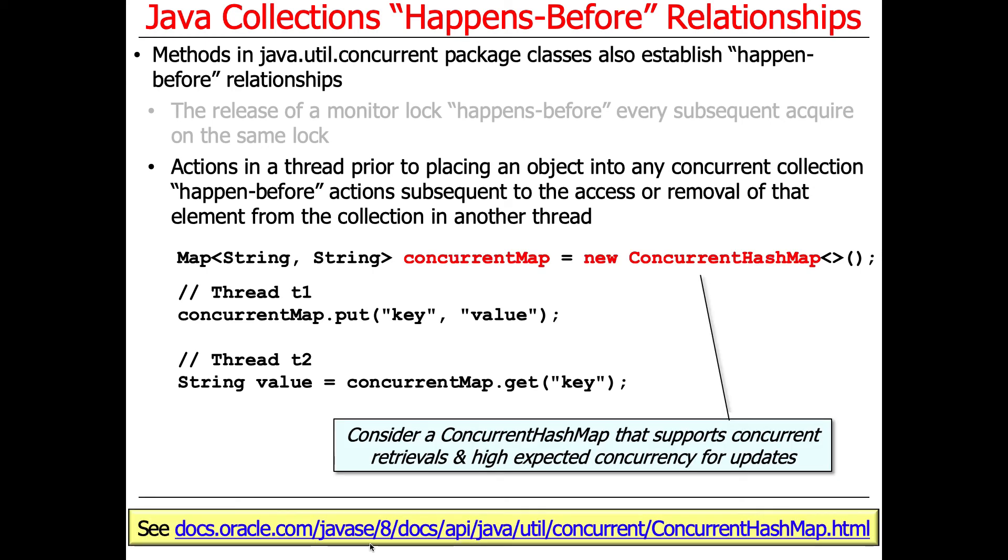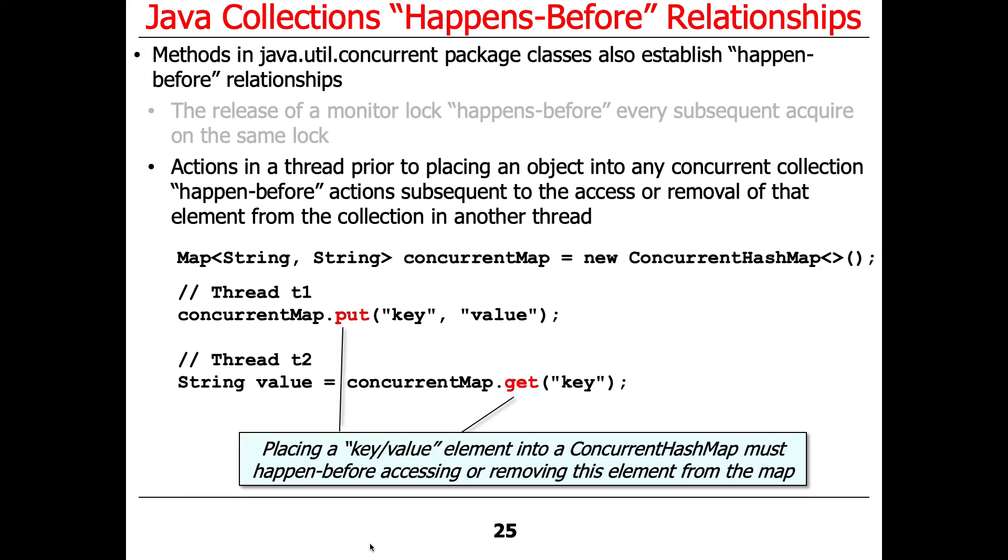Here's an example. We make ourselves a new ConcurrentHashMap. We come along in thread one, and we put a key-value pair into the map. And that putting has to finish atomically. Both the key and the value have to show up. It has to be quiesced.